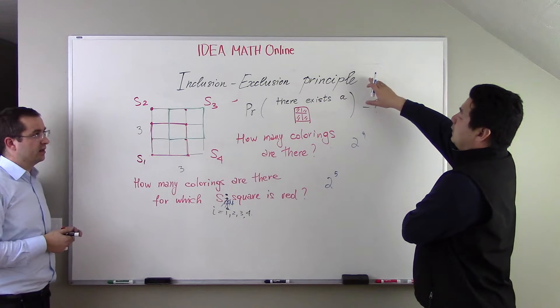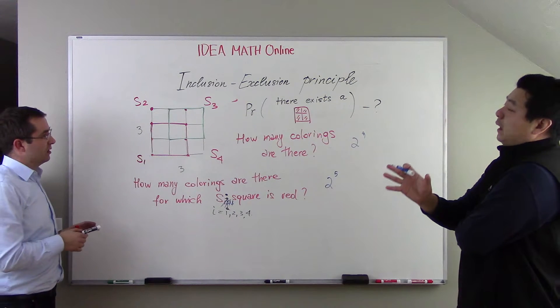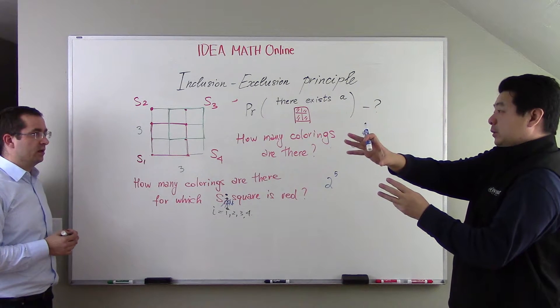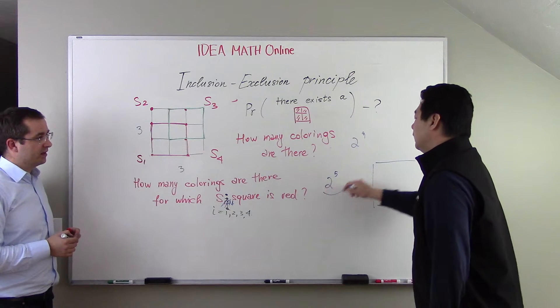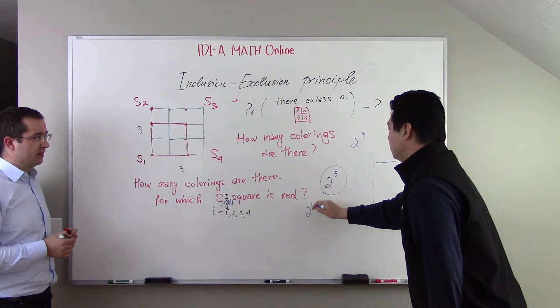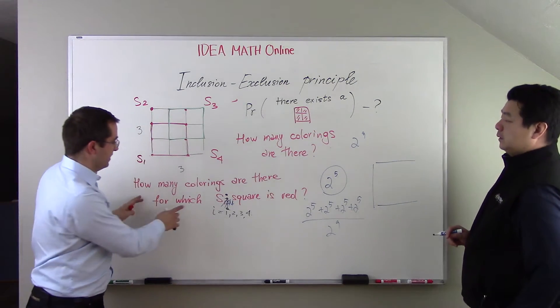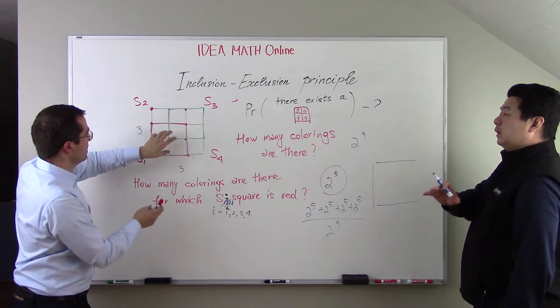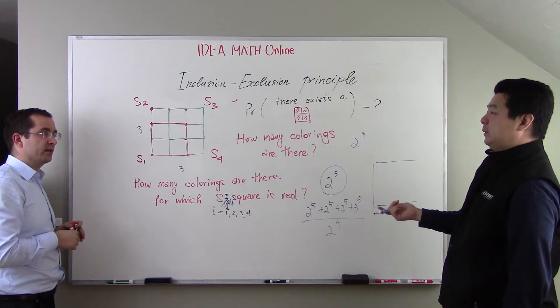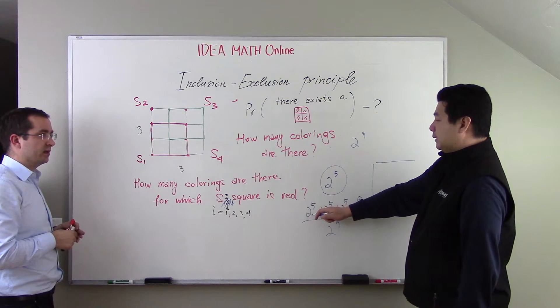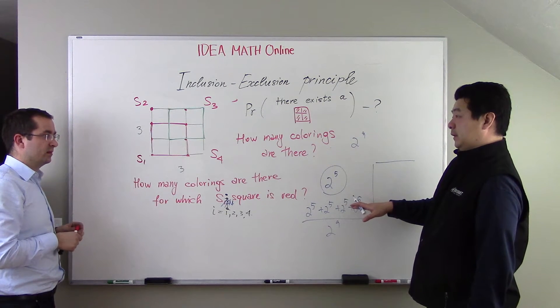So this touches the core thing about this inclusion-exclusion principle. It's because now S1 is red, does not interfere with what? S2 can be red also. So basically in this situation you are overcounted. What I mean is you cannot say the answer is 2 to the 5th plus 2 to the 5th plus 2 to the 5th plus 2 to the 5th over 2 to the 9th. These events are not exclusive because they have intersection.